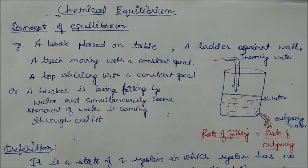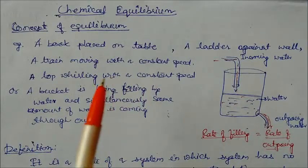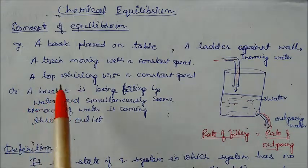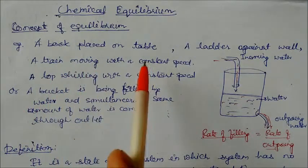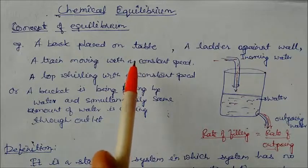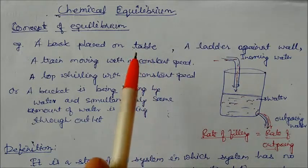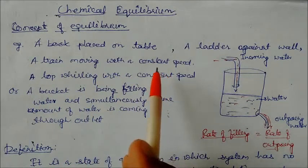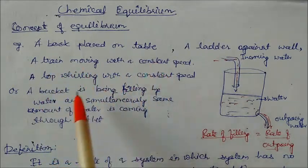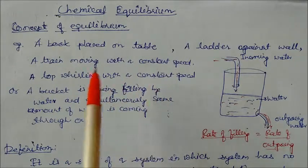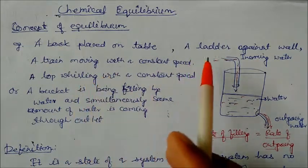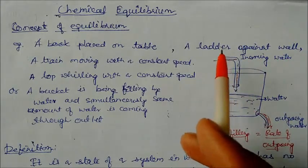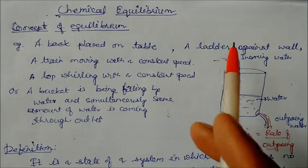Under this equilibrium chapter we will study what is the meaning of equilibrium — what is equilibrium basically. Equilibrium means: if a book is placed on a table, that book is also in a state of equilibrium. Similarly, a train moving with a constant speed is also in equilibrium. A top whirling with a constant speed is also in equilibrium. A ladder lying against a wall is also a stage of equilibrium. So these are some positions of equilibrium.